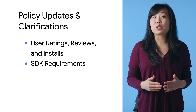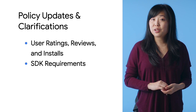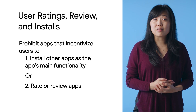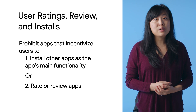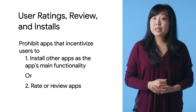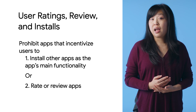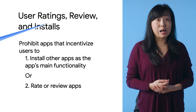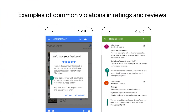Now let's move on to policy updates on user ratings, reviews, and installs. We want users to trust the ratings, reviews, and installs they see about apps on Google Play so they can reliably use this information to decide if an app is right for them. We're updating our policy to state that we don't allow apps whose main functionality is incentivizing users to install other apps, or that incentivize users to rate or review apps. Here are some common violations we've seen. The example on the left shows a notification that offers users a discount in exchange for a high rating. The example on the right shows a reply with a coupon offer to a highly rated review that encourages users to promote the Rescue Rover app.